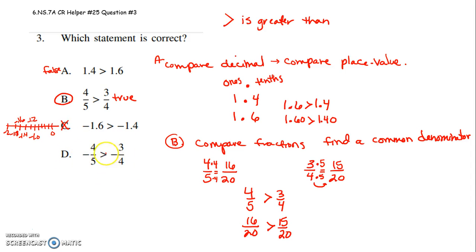And then I could show the last one. We could show a common denominator and I could prove that that was false too. But I already figured out that B was true. So hopefully that helps.